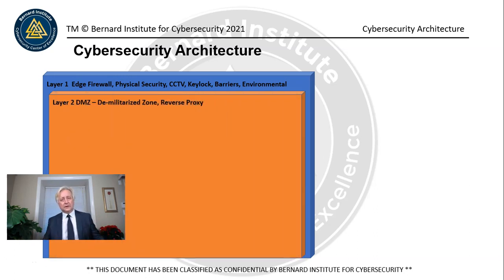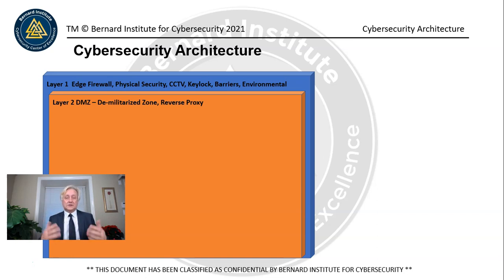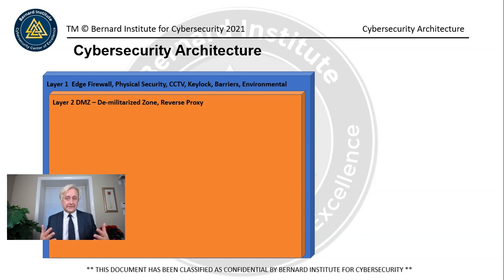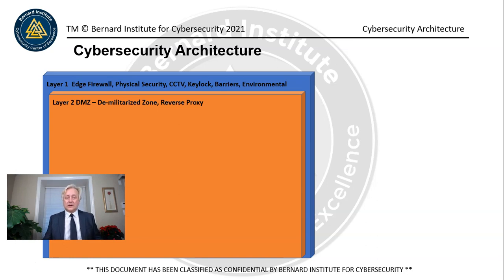The next layer is the sandwich between the two firewalls, called the DMZ or Demilitarized Zone. This is where we might install something like a reverse proxy. These appliances are used to deter certain types of attacks. A reverse proxy helps hide the true identity of your network and the IP addresses used internally, which can deter and slow down attackers.